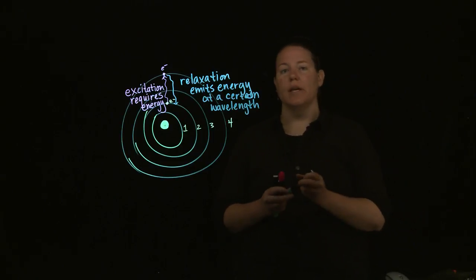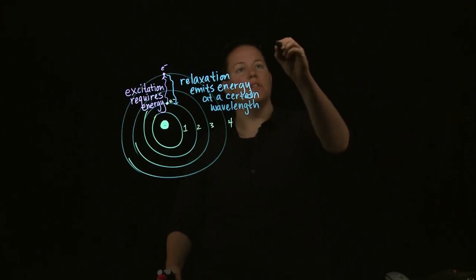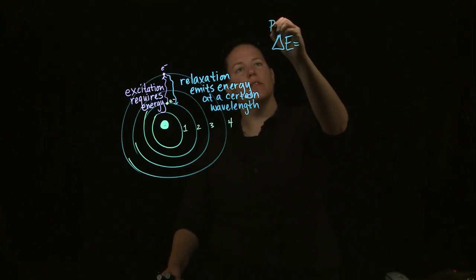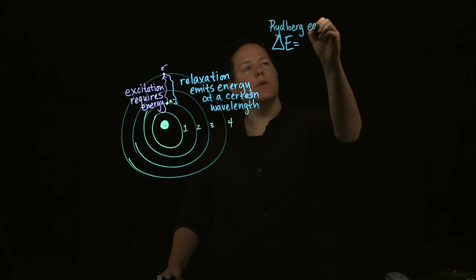That is fabulous for us, because that means that we can calculate all kinds of numbers from this. What can we calculate then? We can calculate how much energy was emitted. So, if I want to calculate the energy emitted between two states, I'm going to use the Rydberg equation.